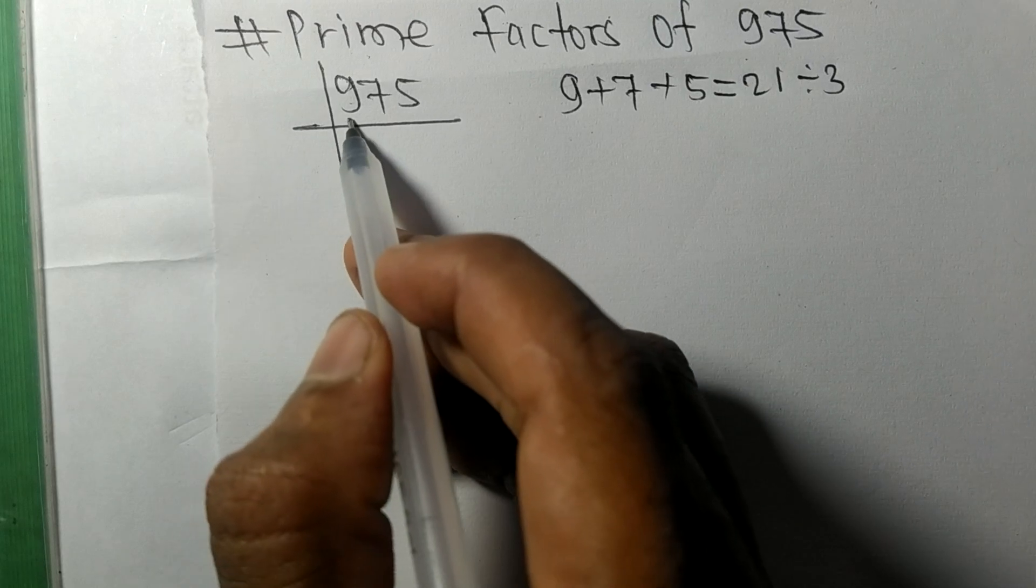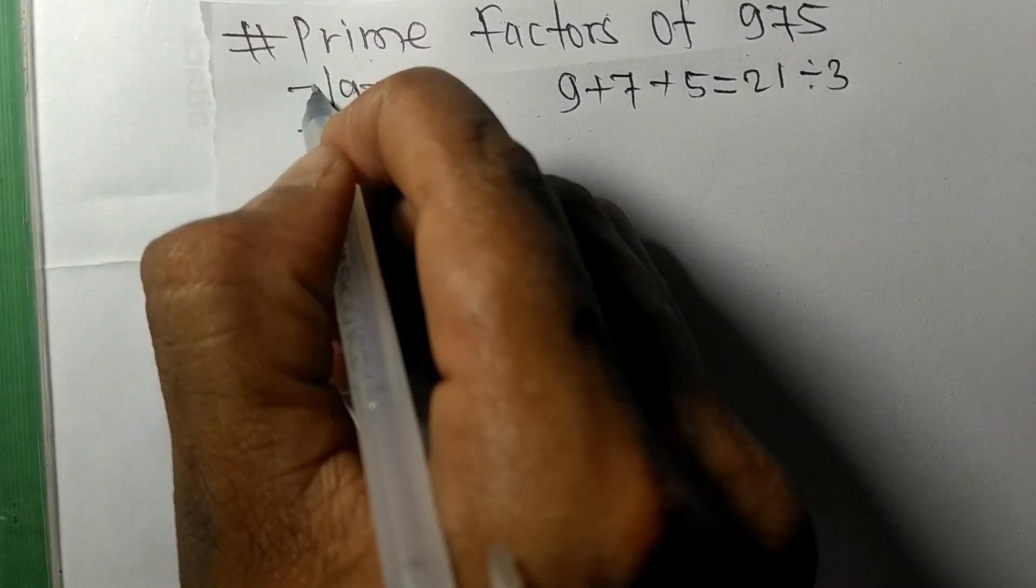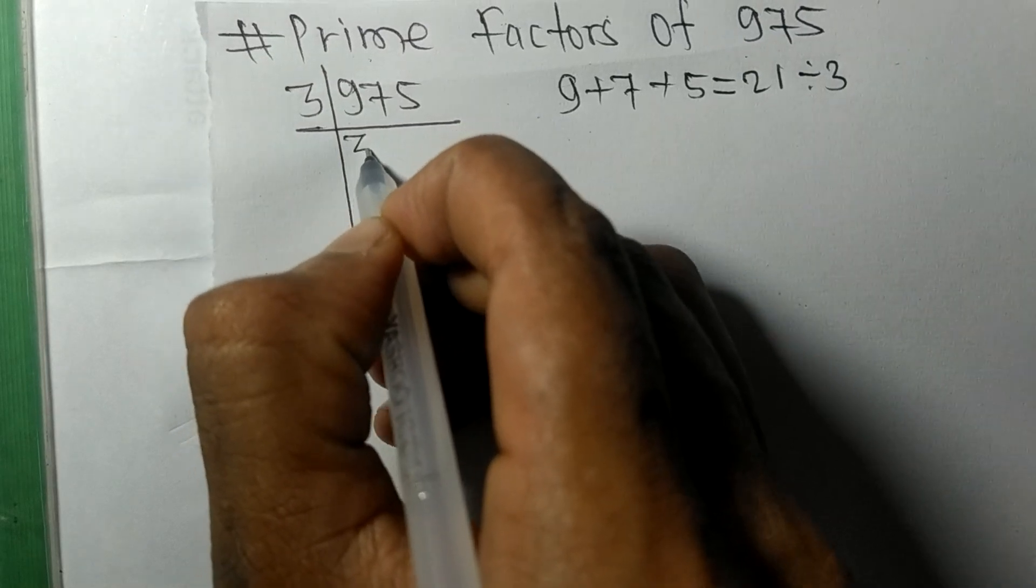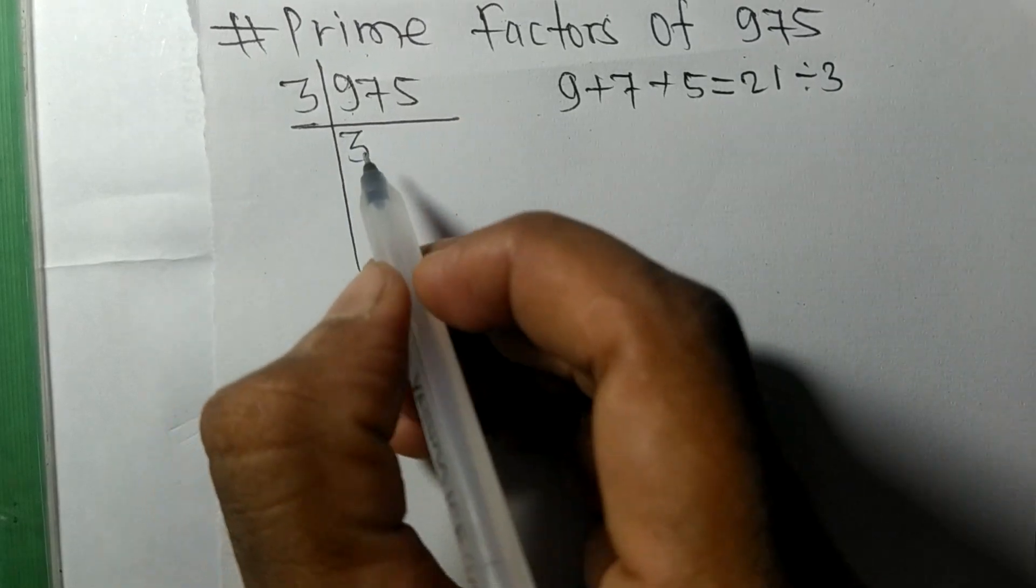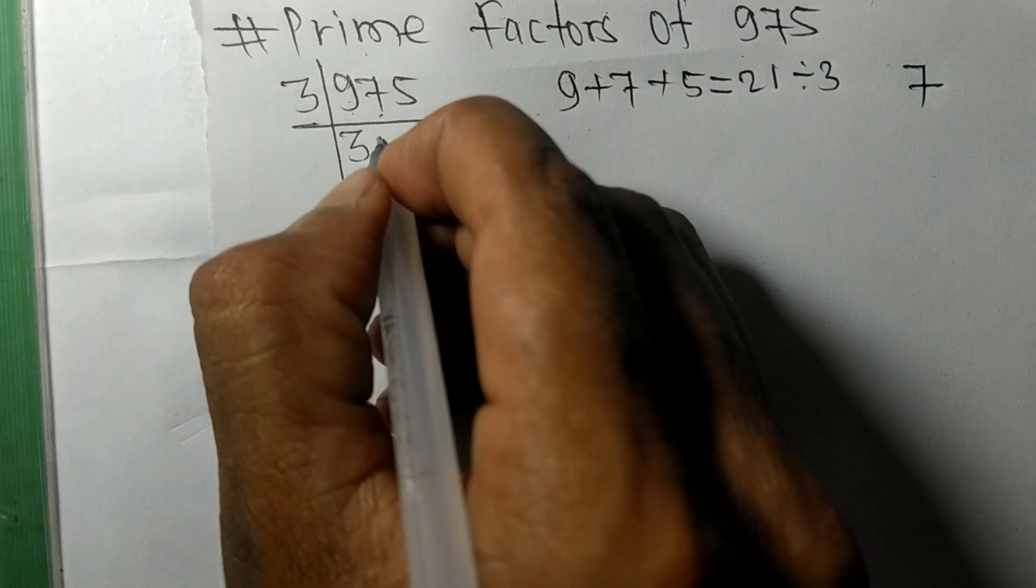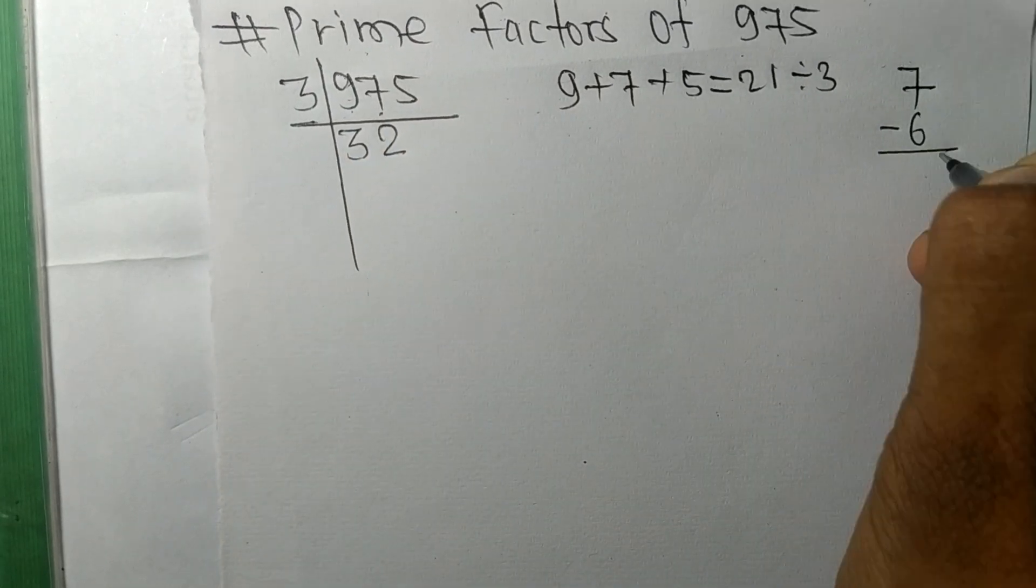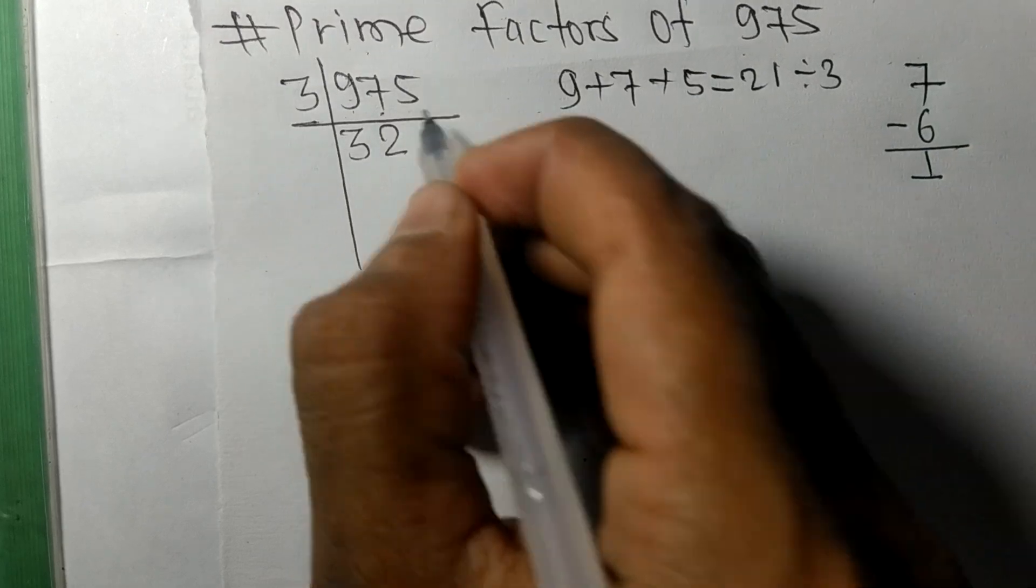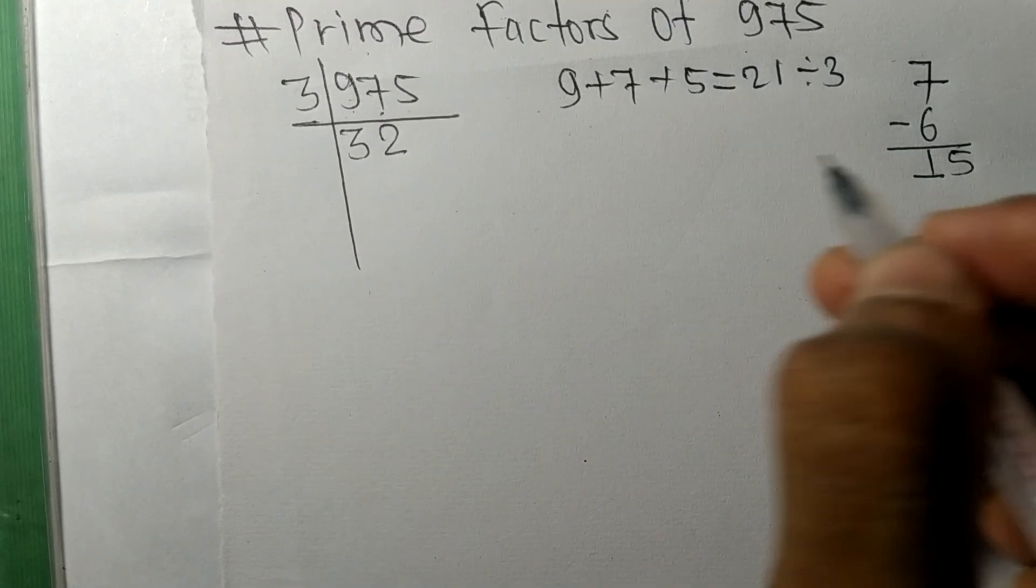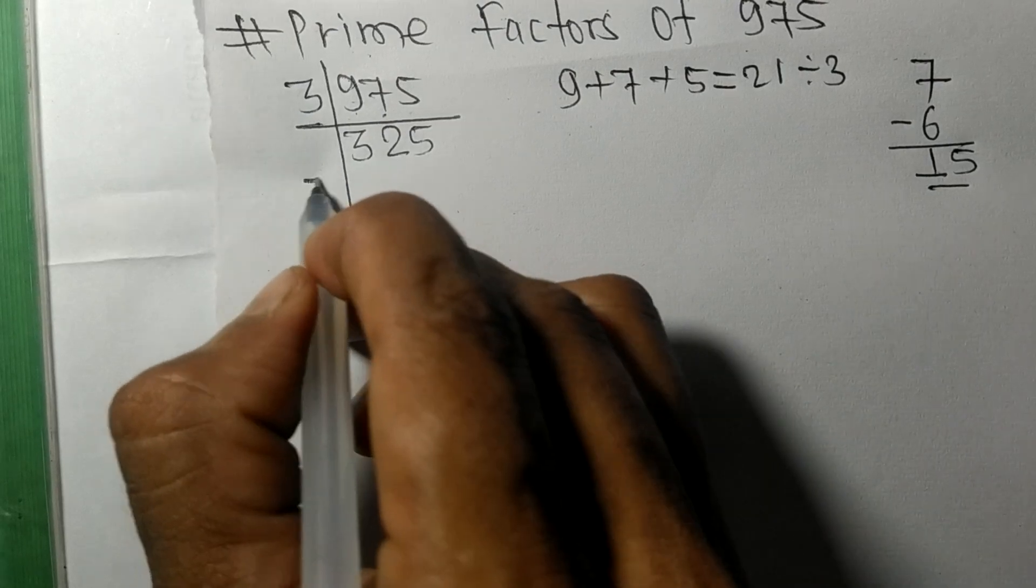So 975 is also divisible by 3. 3 times 3 equals 9. Now we have 7, so 3 times 2 equals 6. On subtracting we get 1, and this 5 makes 15. 3 times 5 equals 15, so now we got 325.